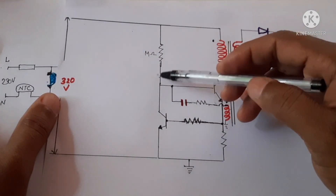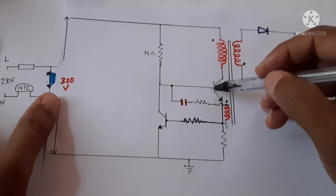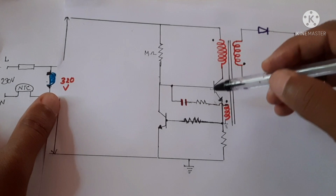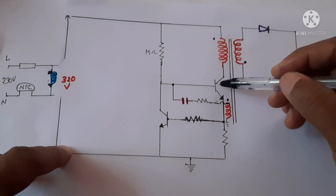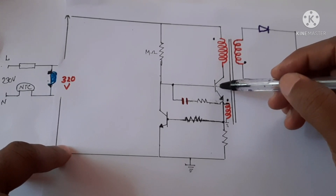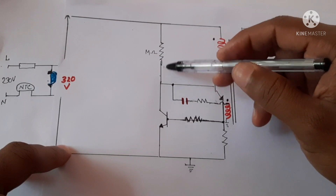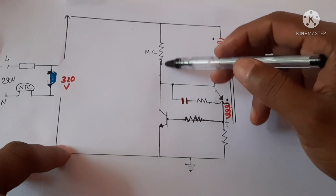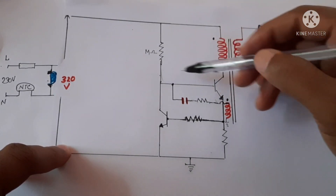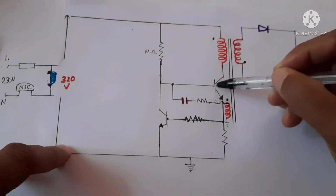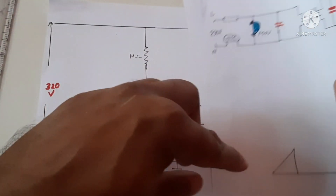The base current increases. At initial time the base current is low because it is only from the resistor. Now, as the auxiliary winding has a voltage, more current flows through it and the capacitor charges. The transistor is now fully turned on — earlier it was not fully on because only the resistor provided base current. Now there are two paths, so it is fully turned on. The current through the inductor now increases linearly.